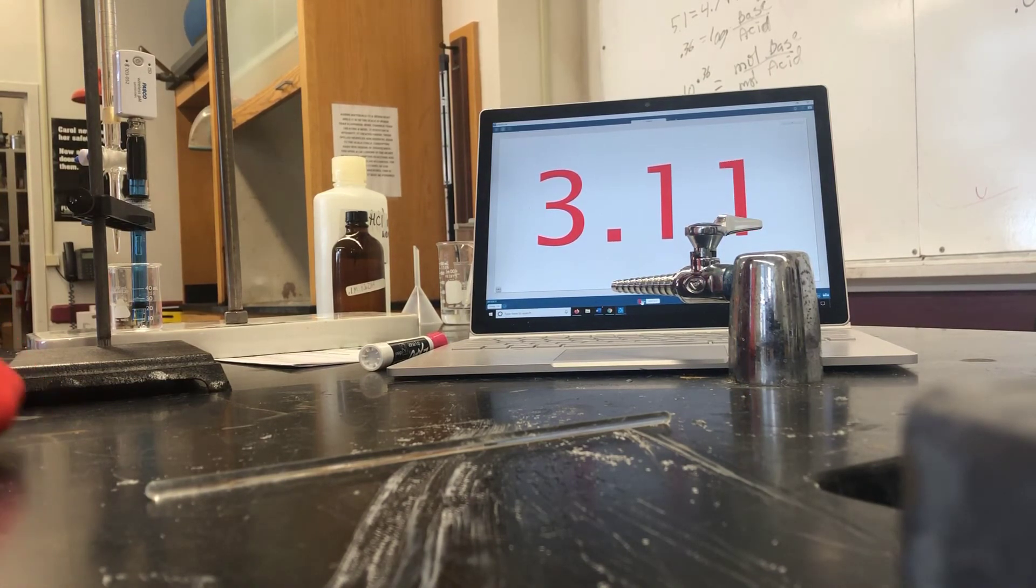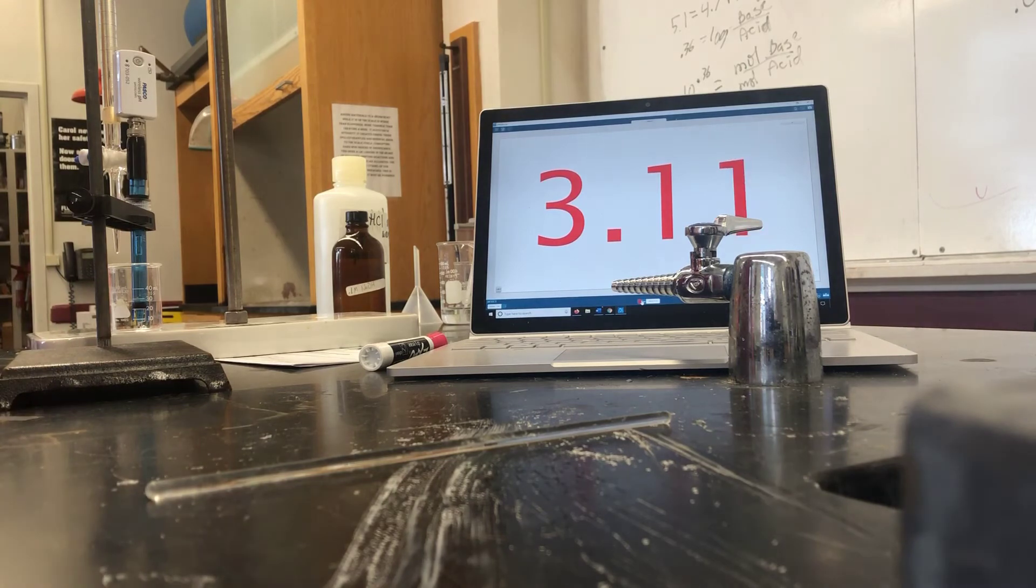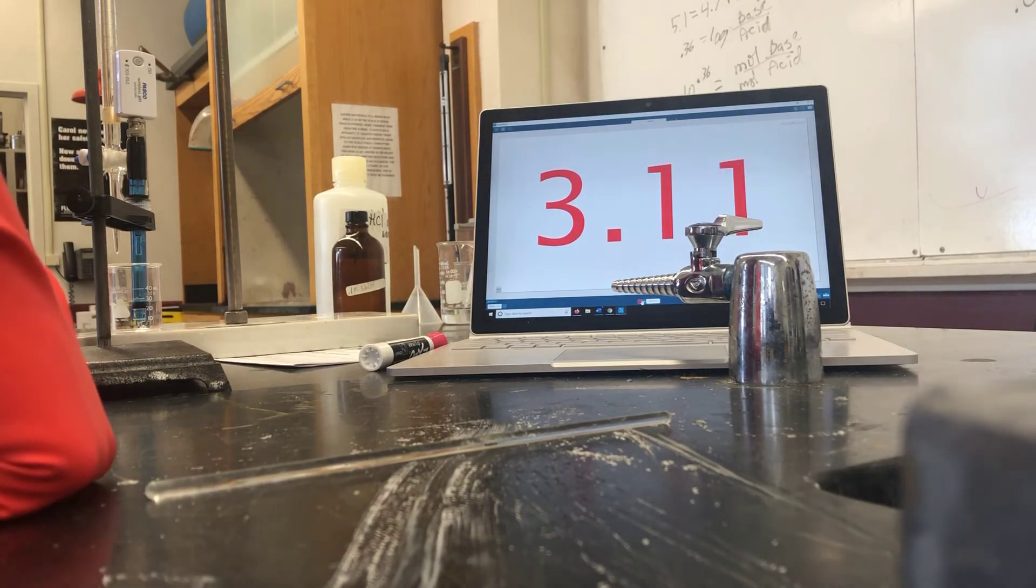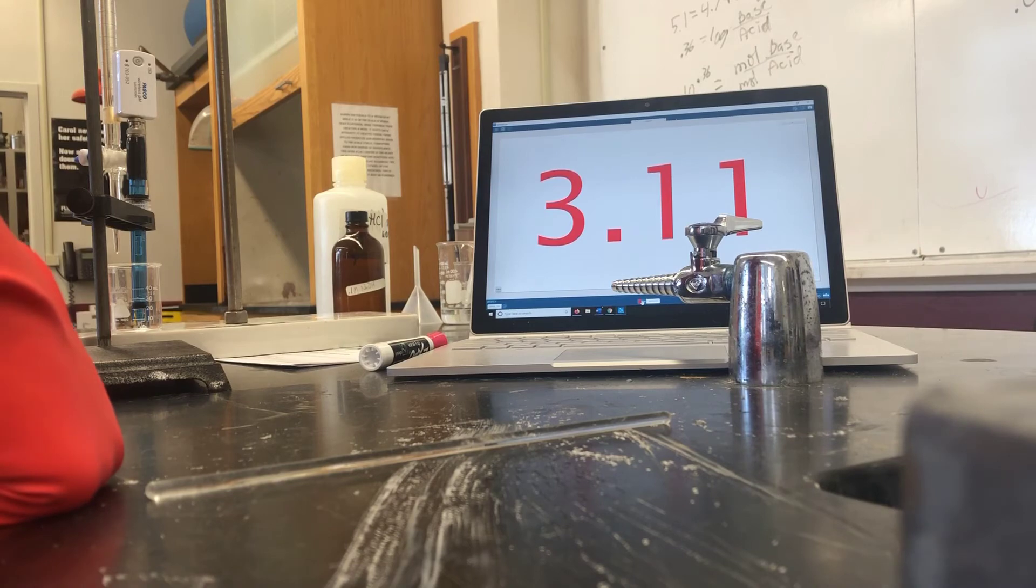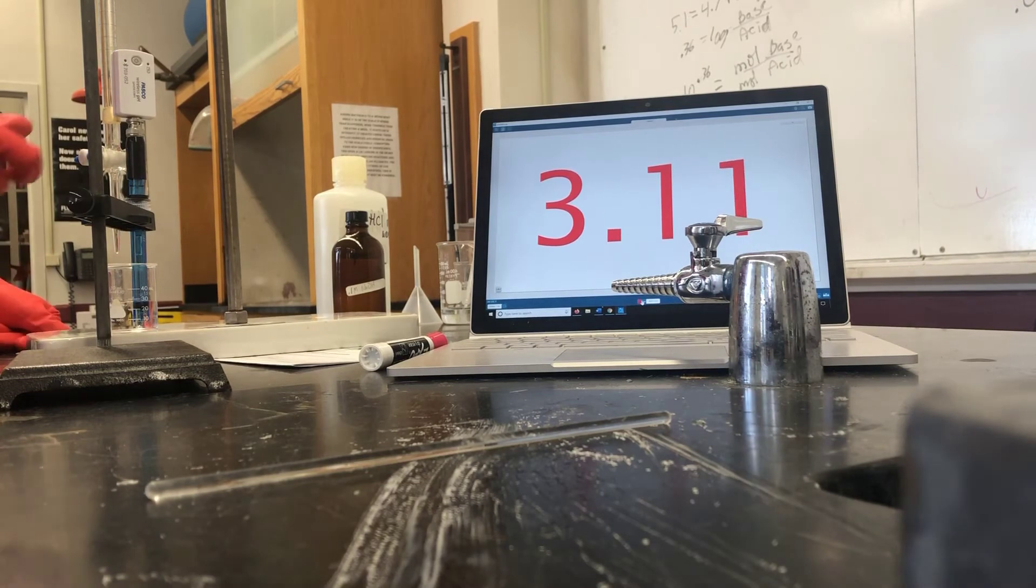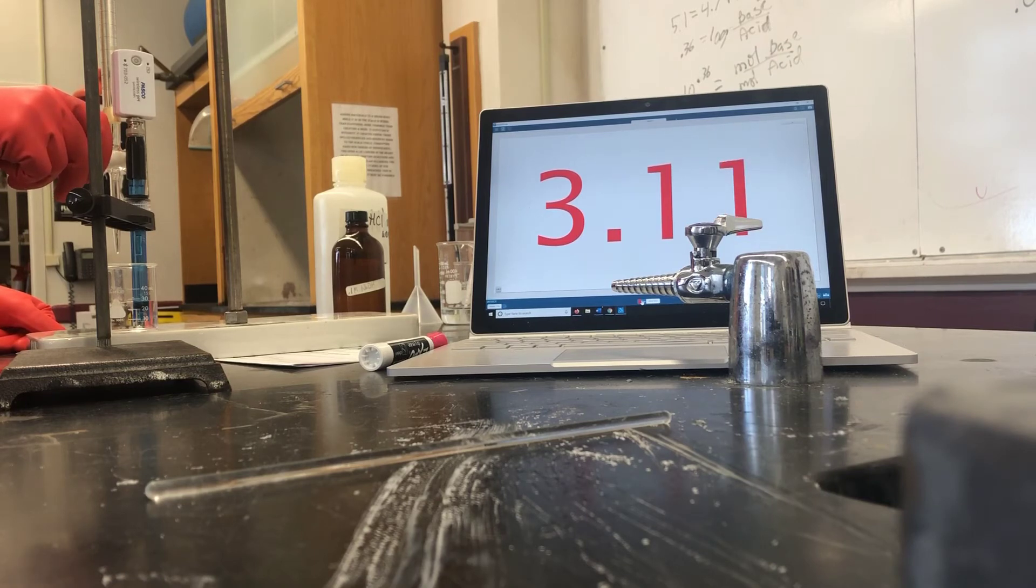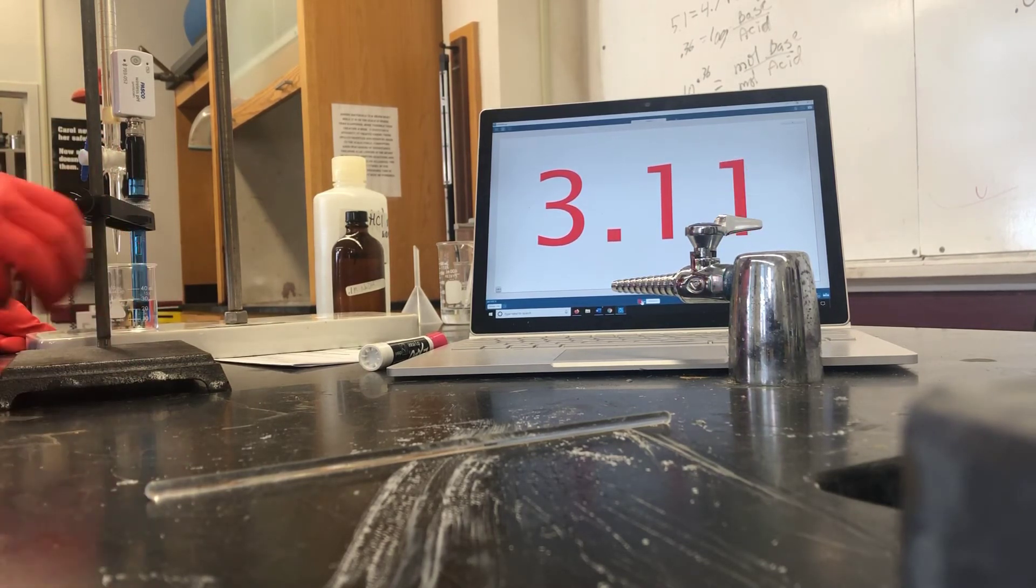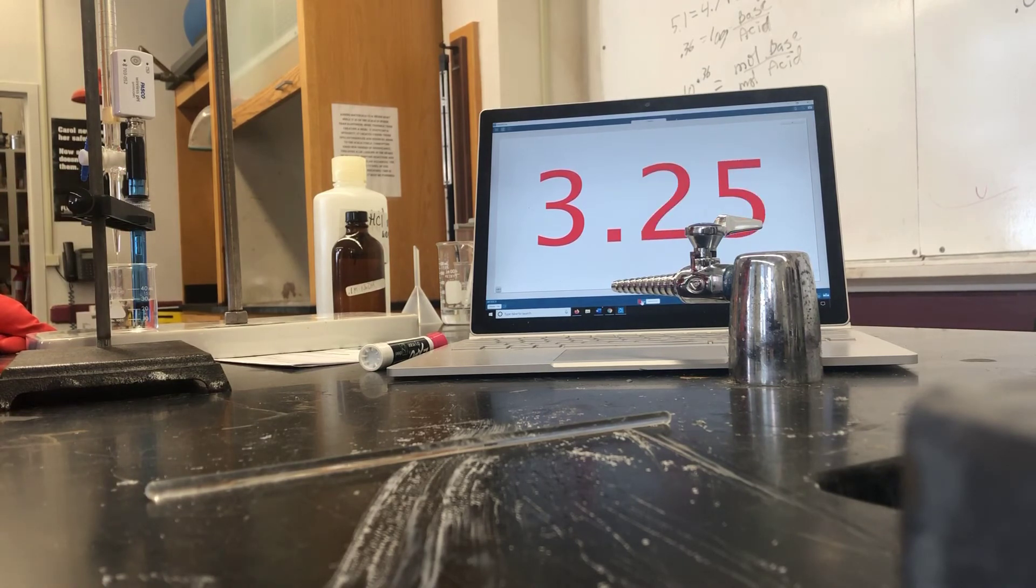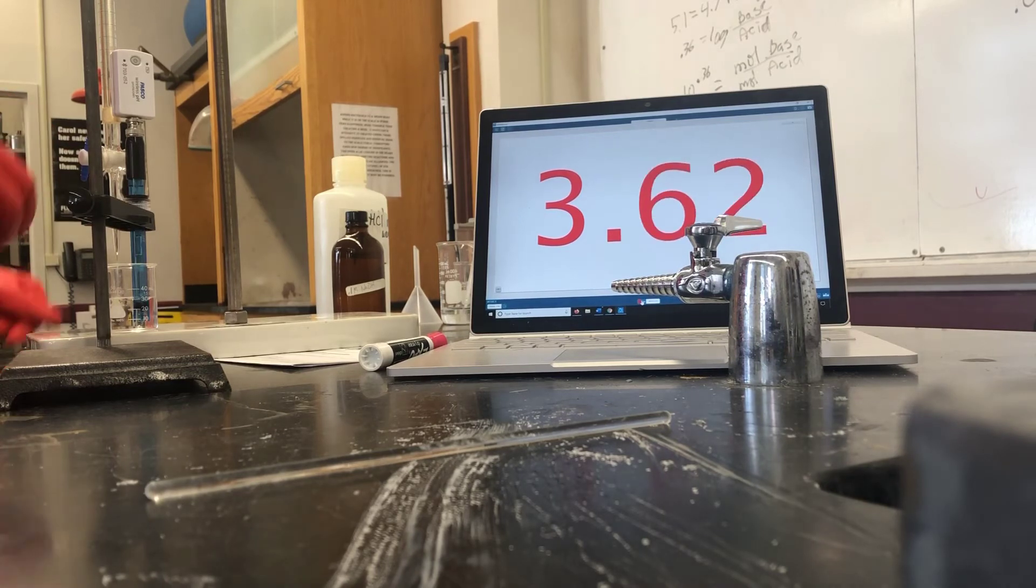Based on all of our equations, we've determined that if we add 17 milliliters of sodium hydroxide, it'll raise the pH to our intended 5.1. So we're going to start adding our titrant of sodium hydroxide and we'll see what happens. As you can see, the pH is already beginning to climb, reaching about the 4 milliliters mark. You can see it's already getting to 4.